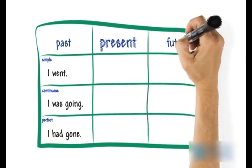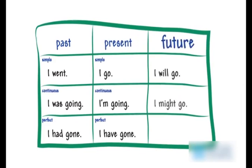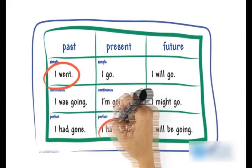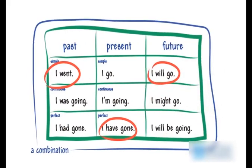If it is happening in the present, use present tenses. If it is predicting the future, use a variety of future tenses. Sometimes you can use a combination of these different tenses, but learn each one well.